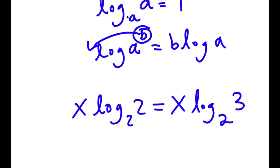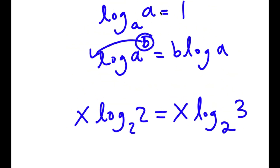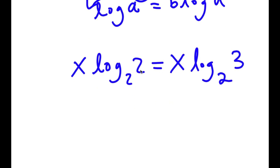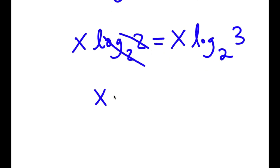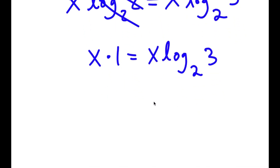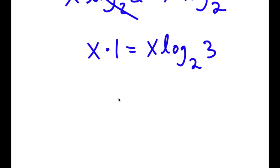Remember, if I have something in the form log base a of a, this is equal to 1. So log base 2 of 2 cancels out, and I'm simply left with x times 1 is equal to x times log base 2 of 3. And x times 1 is simply x, so I get x is equal to x times log base 2 of 3.